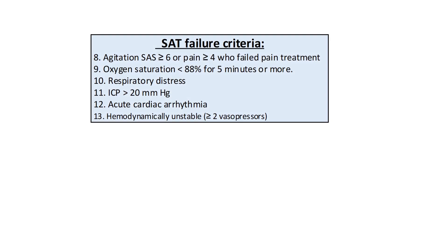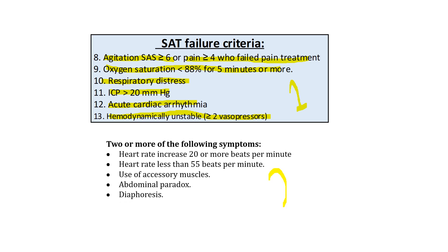After holding the sedation, if the patient becomes agitated with SAS of 6 or more, or pain of 4 or more and we failed to manage it, or saturation becomes less than 88% for 5 minutes or more, or he becomes in respiratory distress, or ICP is more than 20, or acute cardiac arrhythmias, or hemodynamically unstable using 2 or more vasopressors — the SAT fails. It also fails if he develops 2 of these criteria: heart rate increased 20 bpm above baseline, heart rate less than 55 bpm, use of accessory muscles, abdominal paradox, or diaphoresis.